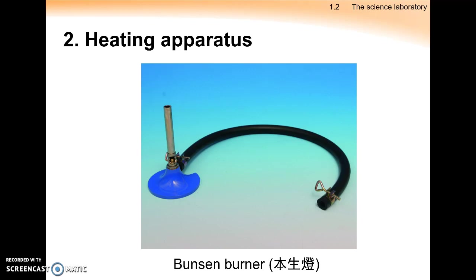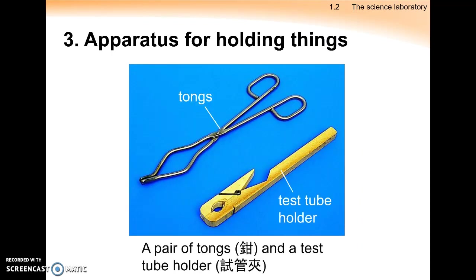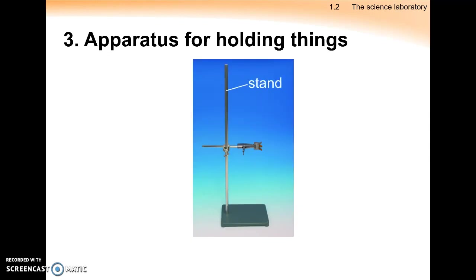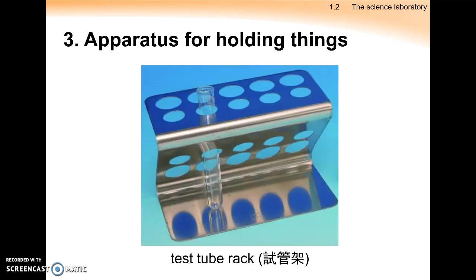This is the picture of a Bunsen burner. We will talk about how to operate a Bunsen burner in a later lesson. If we need to hold some solid for heating, we may use tongs, which are made of metal. If we need to hold a test tube upon heating, we may also use a test tube holder. A stand and clamp may also be helpful for holding other things.